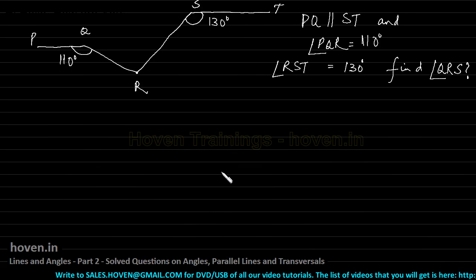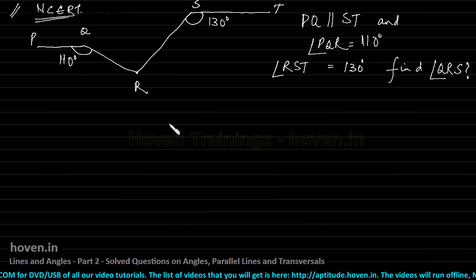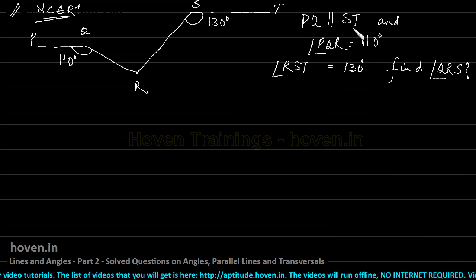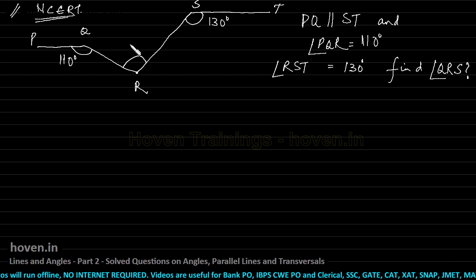In this question, this question was not from any previous exams, but this question is a very good question from NCERT books. Let us see how to solve this question. Here he says PQ is parallel to ST. This is PQ, this is parallel to ST, and angle PQR is 110 degrees. Angle RST is 130 degrees. Find angle QRS. Basically we have to find out this angle which we can label as x degrees.